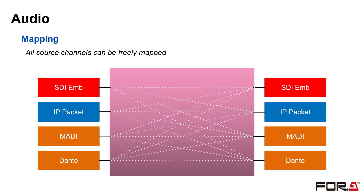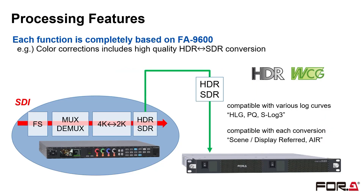All source channels can be mapped on the FA1616 as shown in the figure. The audio interface is optional, but the mapping function is standard. As part of the same FA series, each function of the FA1616 follows the FA-9600 completely. The high-quality conversion between HDR and SDR and various color correction functions realized in the FA-9600 are also available in the FA1616.